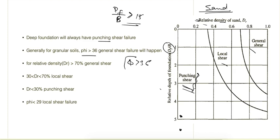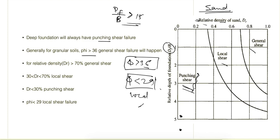For granular soil, if the angle of internal friction is greater than 36 degrees, then general shear failure will happen. If it is less than 29 degrees, then local shear failure will occur.